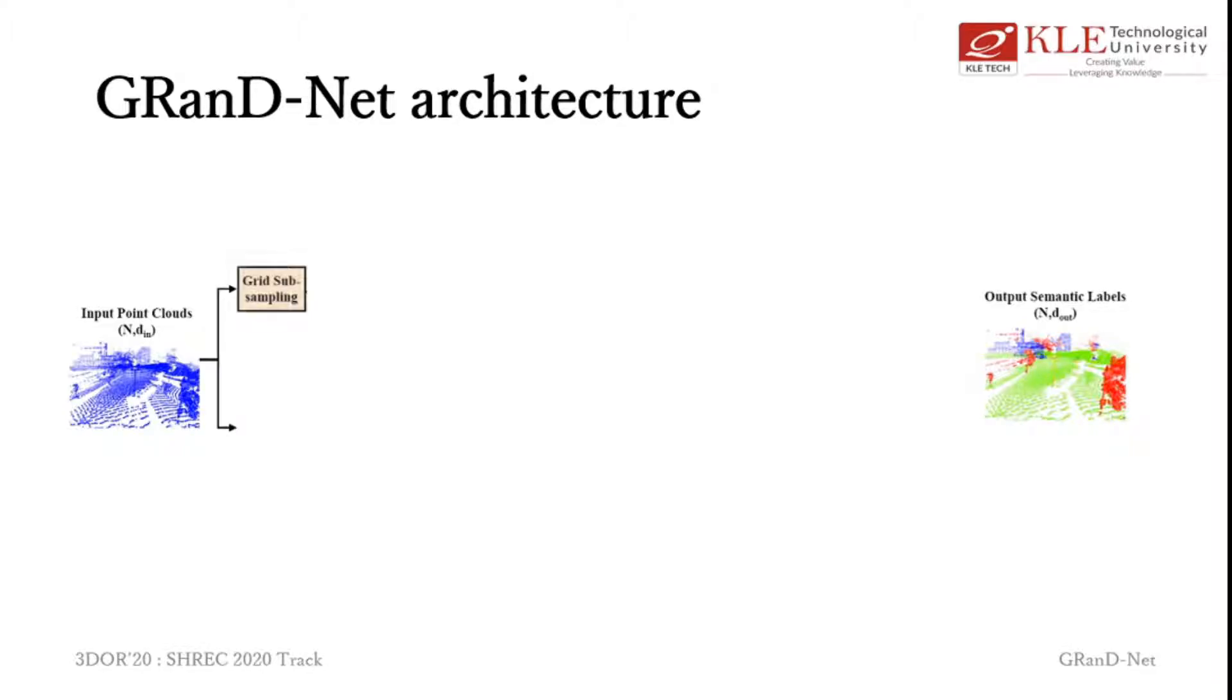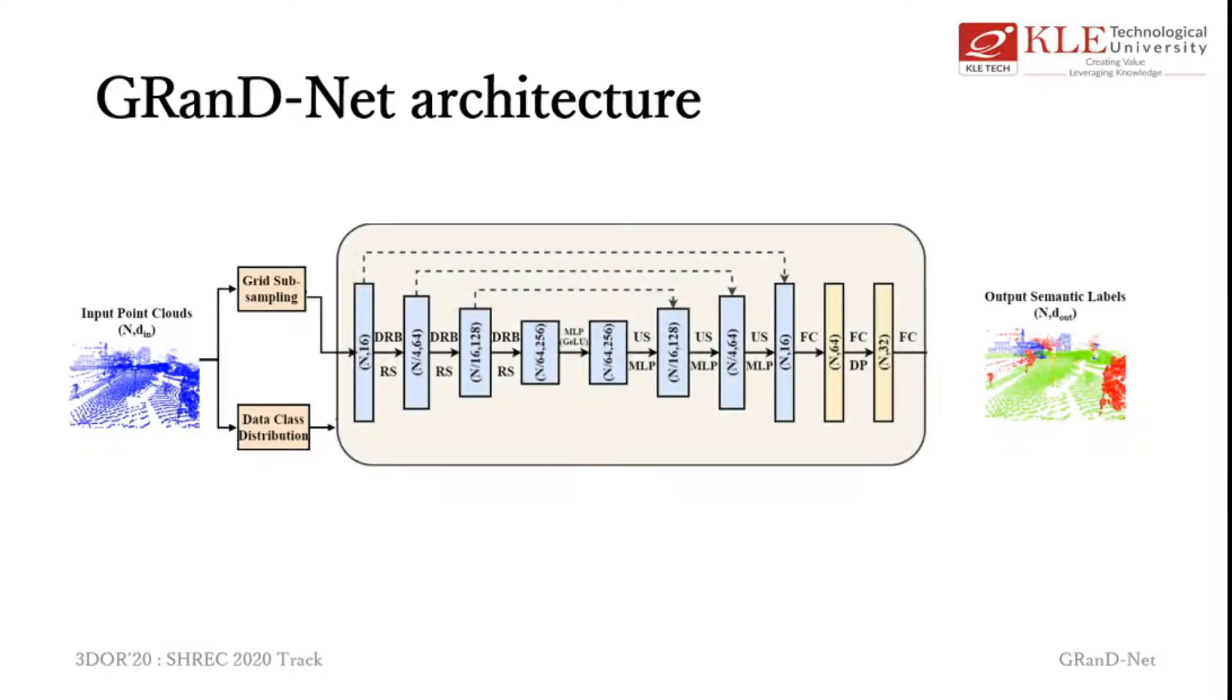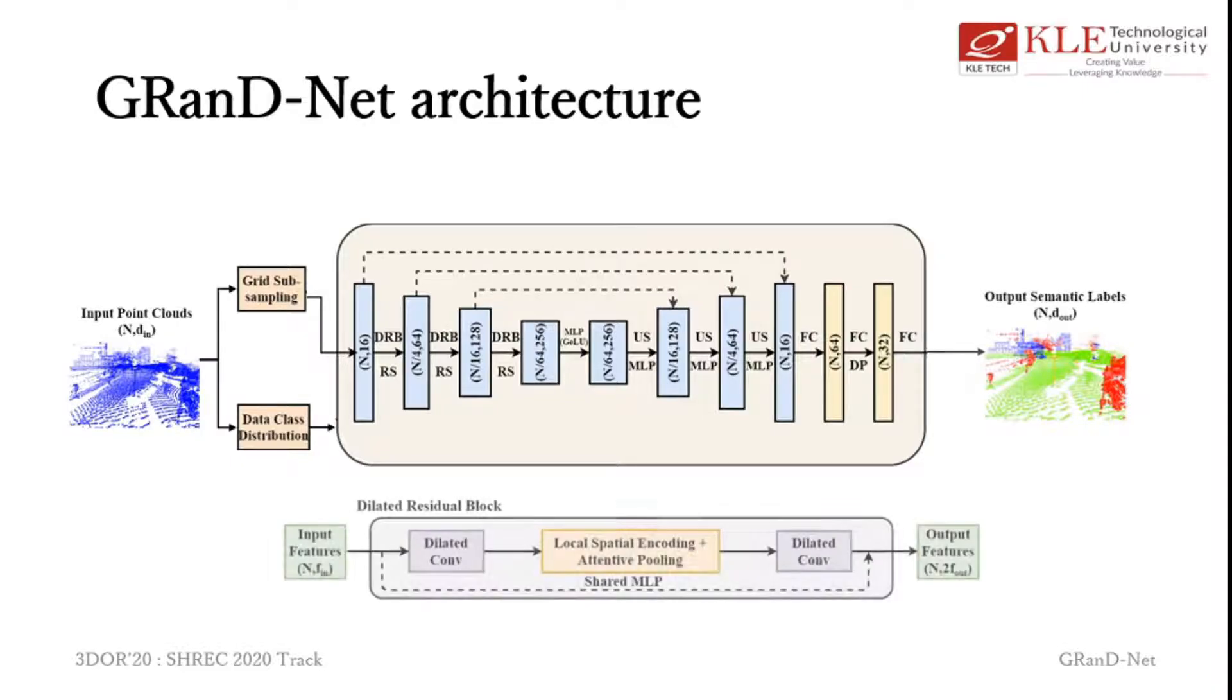The data class distribution is calculated to feed into the model. The model consists of stacked layers of dilated residual blocks that reduce the size of the point clouds incrementally while preserving the information. Dilated residual blocks are the building blocks of GRanD-Net where we use dilated convolutions as our basic operation along with local spatial encoding and attentive pooling. The result of this block is a more informative representation. The reduced representation is then upsampled while applying MLP to get per point labels.